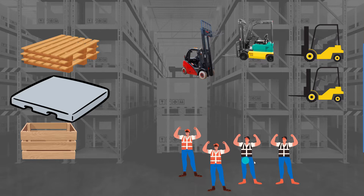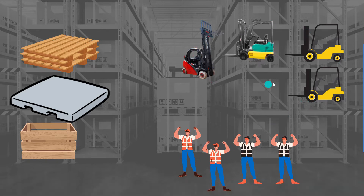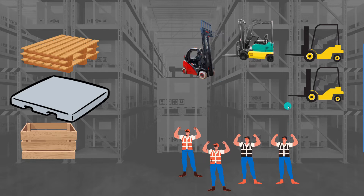You have different types of operators, you also have different types of forklifts, and you have different types of products. Each operator type is able to drive a subset of the forklifts available. For example, the guys in orange maybe can drive the red forklift, while the guys in black can drive this forklift and these two forklifts. Each operator has different skills.